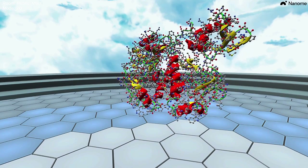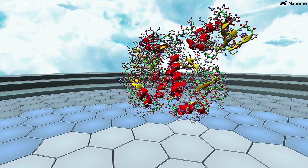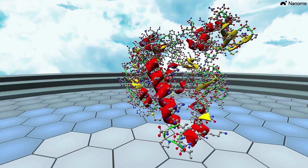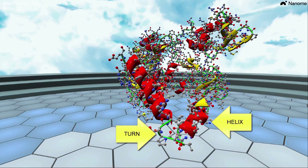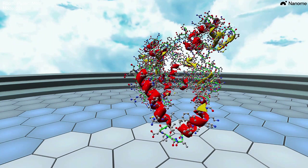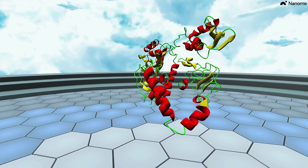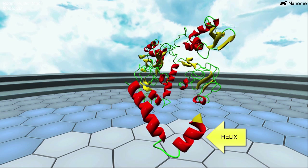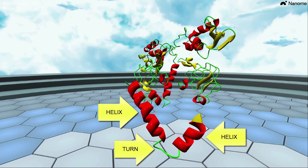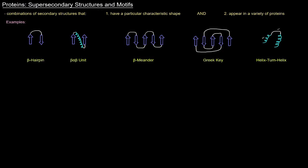This is catabolite activator protein, and it's got a helix-turn-helix in it — right here. We can see a helix, a little turn, and then another helix. This can be seen more obviously if we remove the atoms and bonds: we have the helix here, then the turn, then the helix on the other end. These tend to show up in proteins this way, and because they're combinations of secondary structures, they're called super-secondary structures — sometimes motifs.